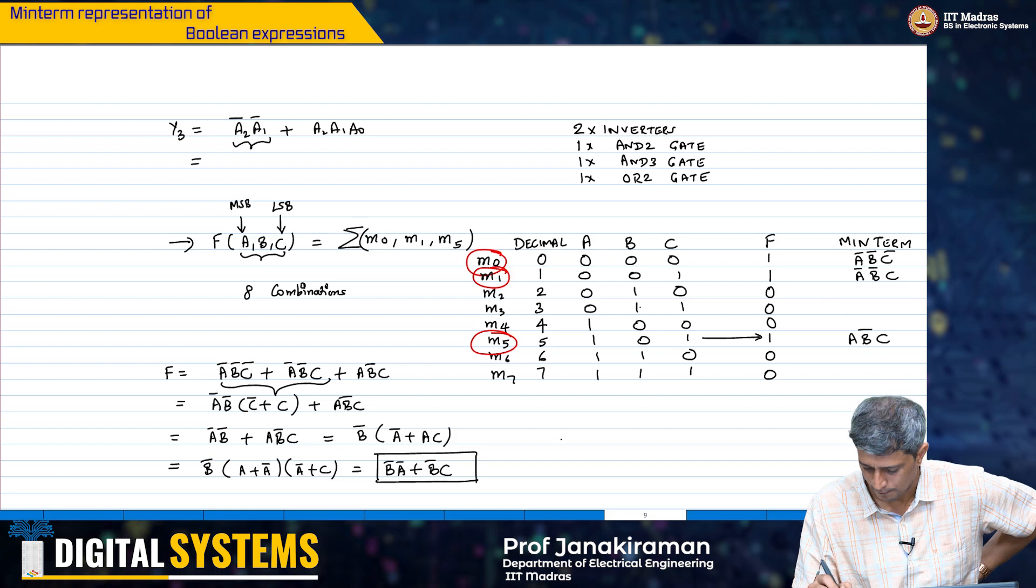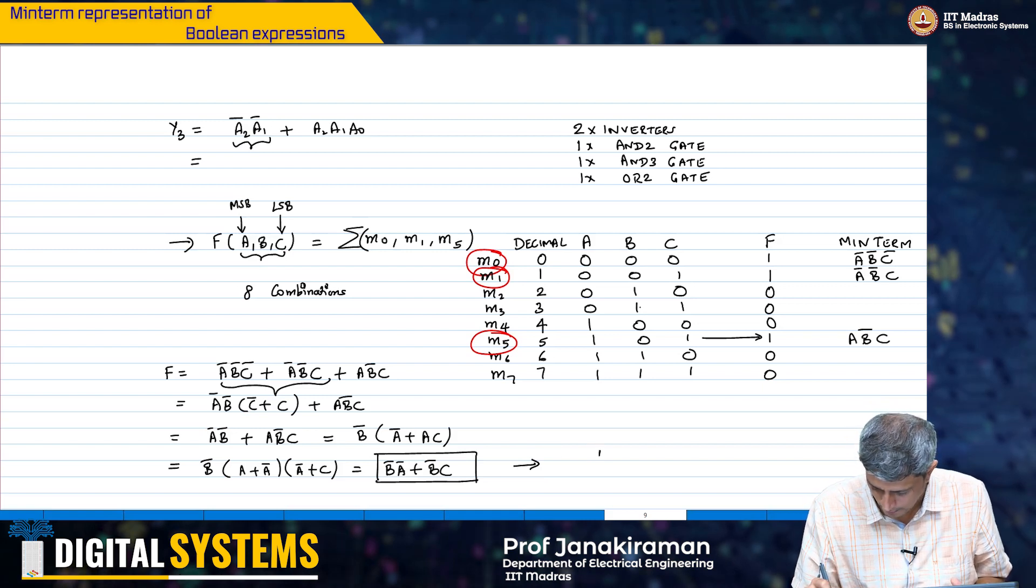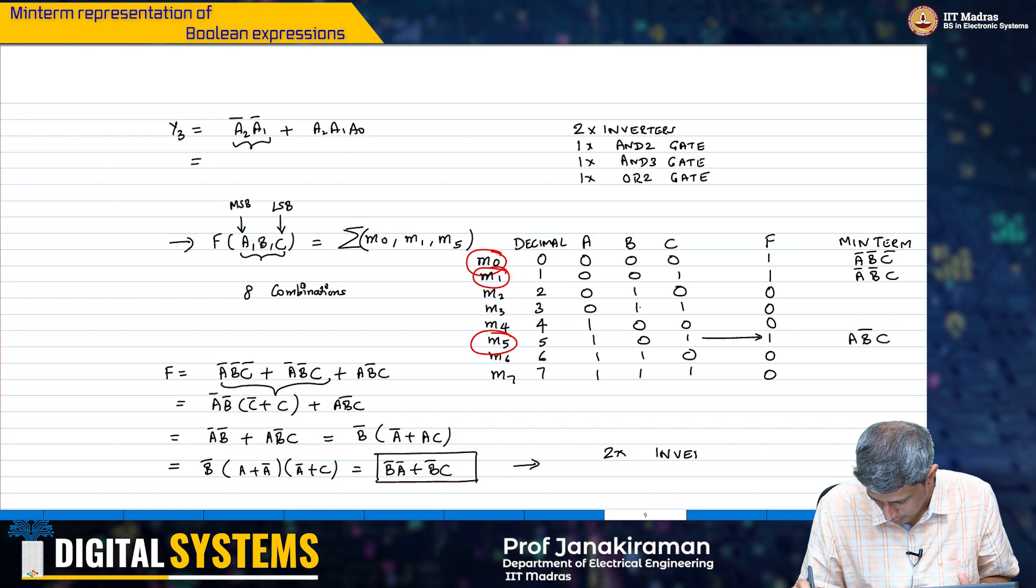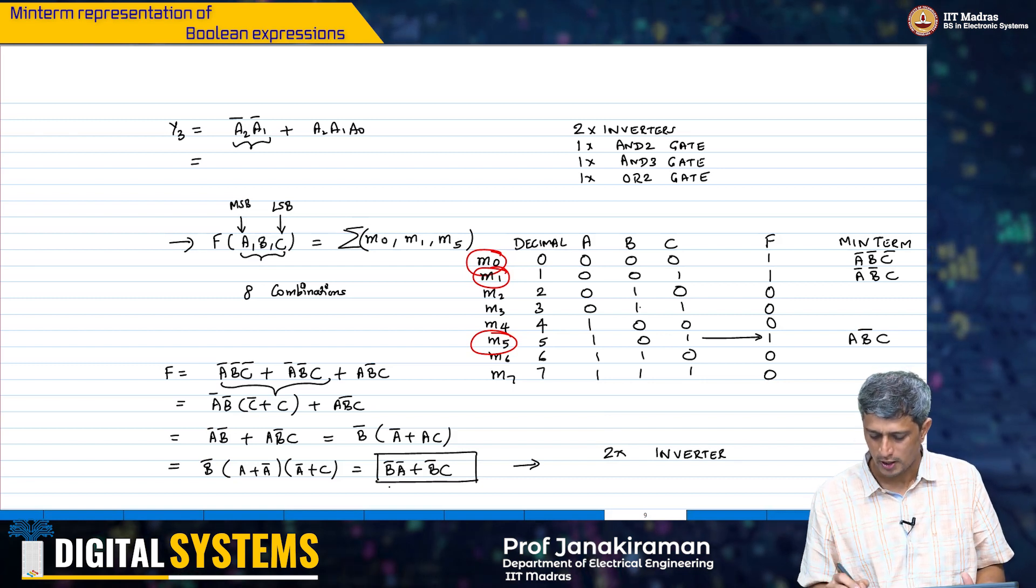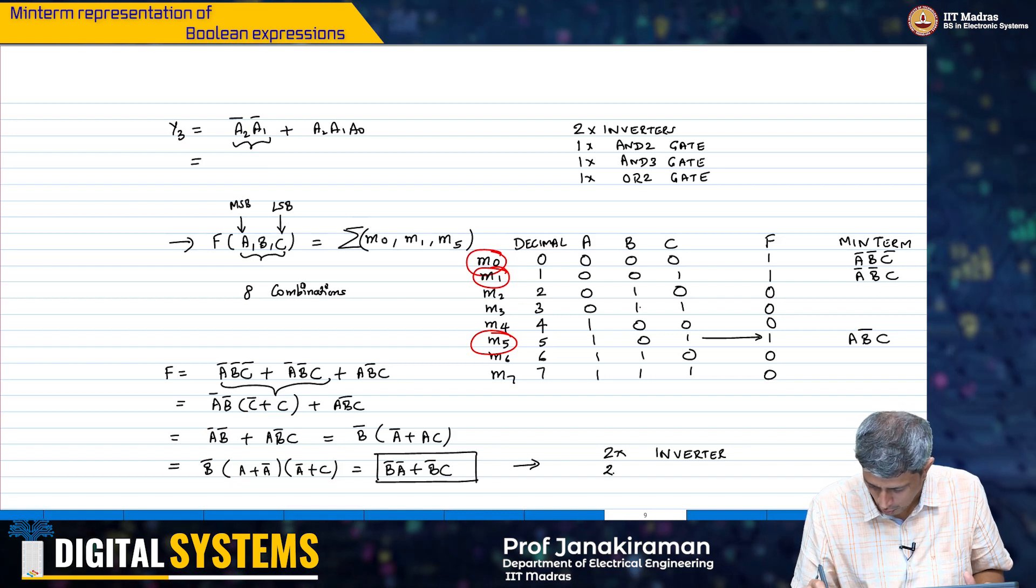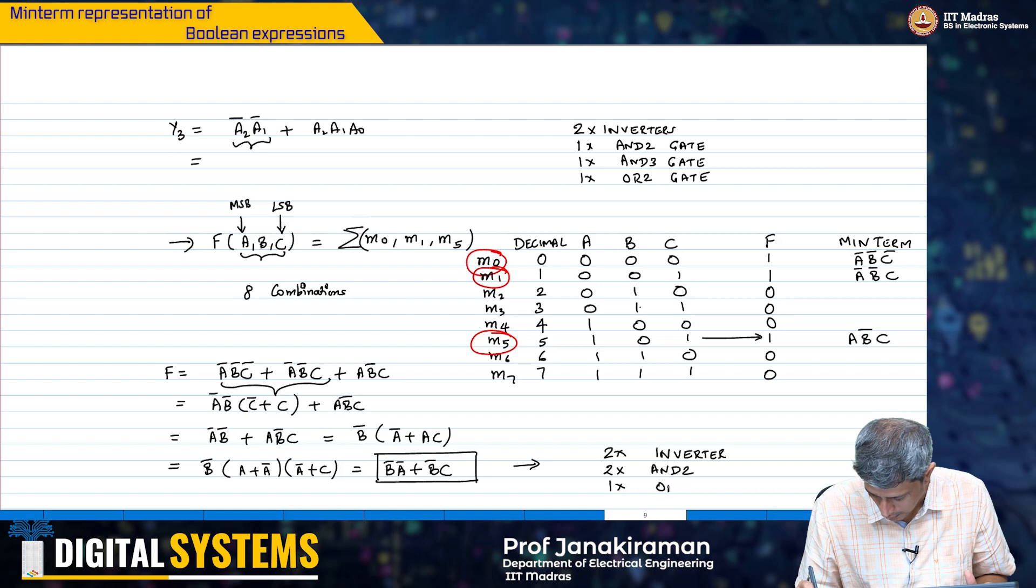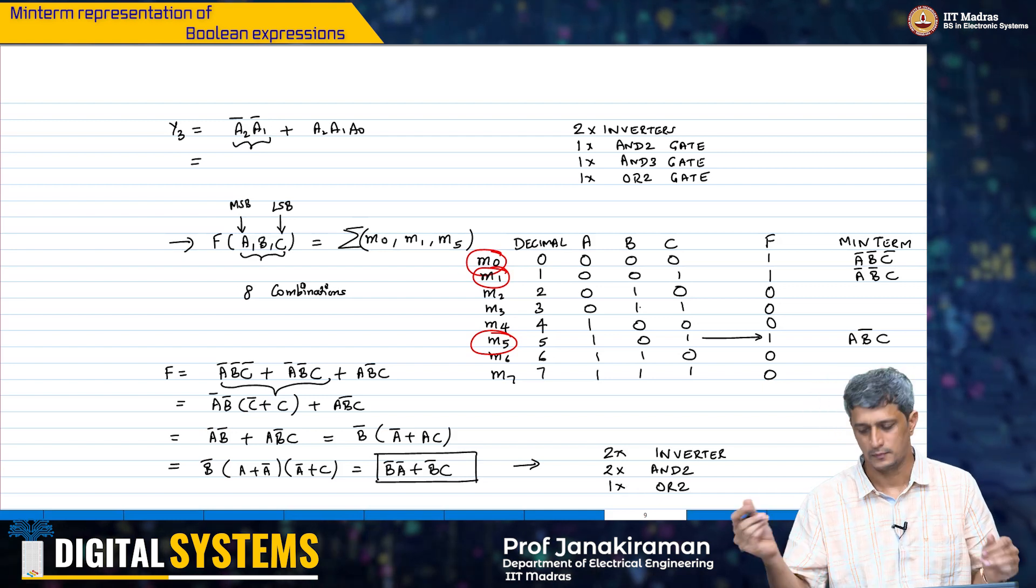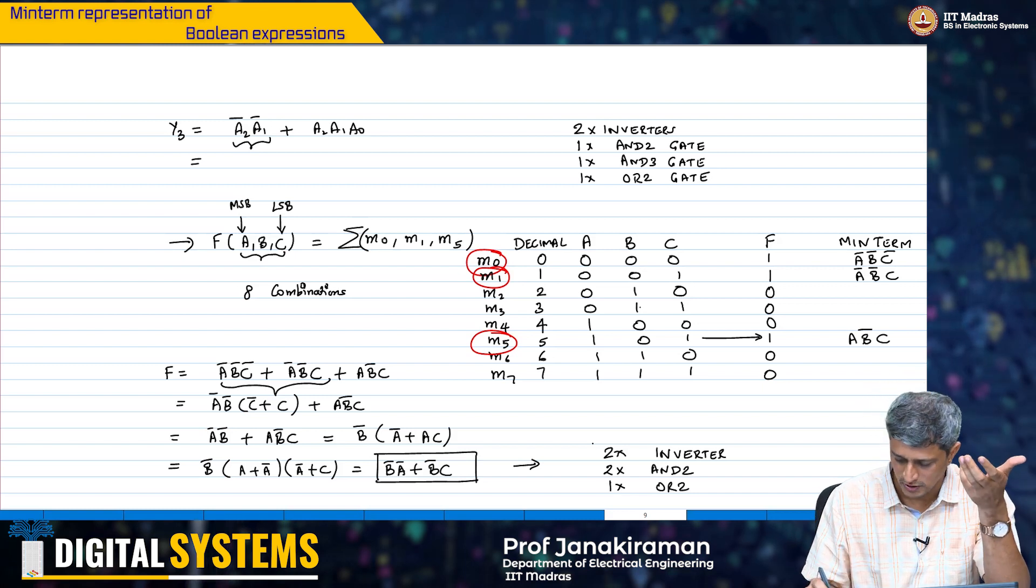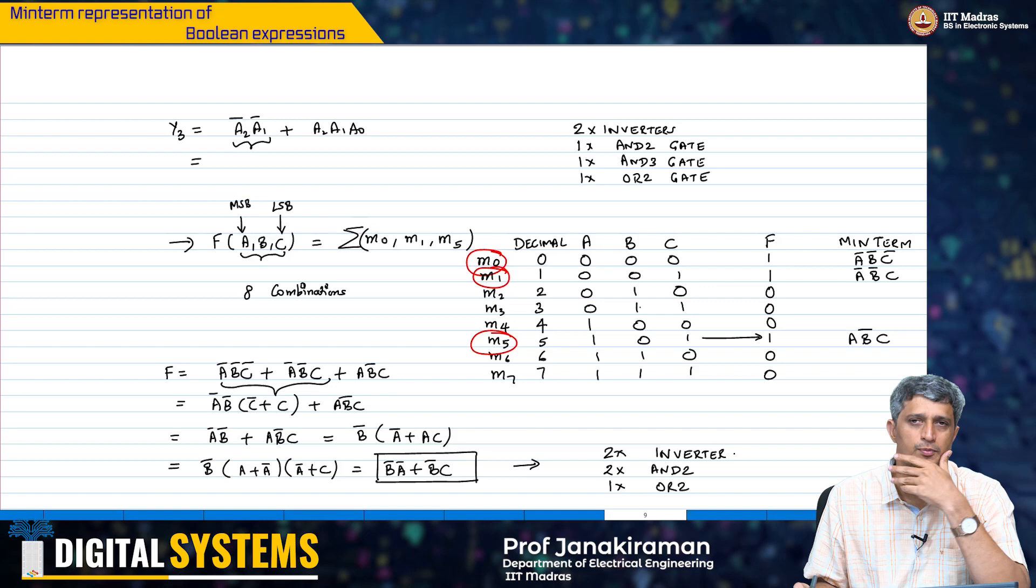So, therefore, the effective expression that we have is basically b bar a bar plus b bar into c. So, again how many inverters, how many AND gates and OR gates you need to implement this? Well, that is pretty straightforward. You basically need a bar and b bar. So, you need 2x inverters. Then you need to generate b bar a bar and b bar c and therefore, you need to have 2x AND 2 gates. And then 1x of OR 2 gate. So, effectively this is the eventual gate count, the logic gate count in order to implement this simplified Boolean expression.